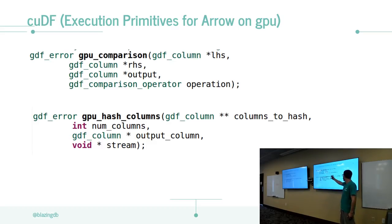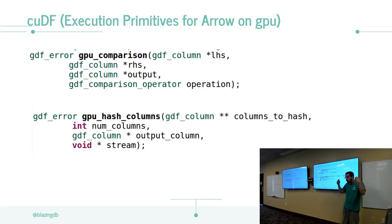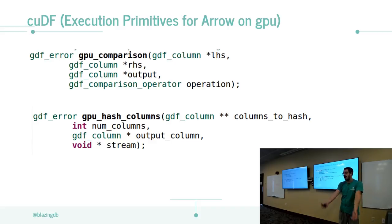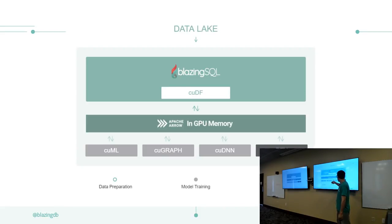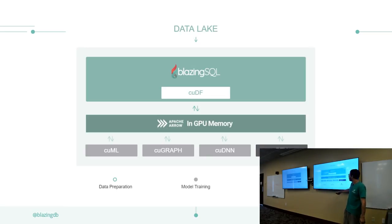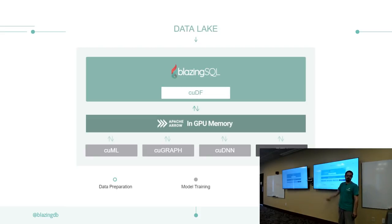We have lots of primitives where the inputs are columns and the outputs are always columns. Everyone operating in libgdf is using columnar primitives and we're all interacting together. The idea we were trying to solve is ETLing information for cuDNN (neural networks), cuGraph (graph library), or cuML - making it so you could take information from the data lake, bring it into Arrow GPU memory, and make it available to all these other libraries.